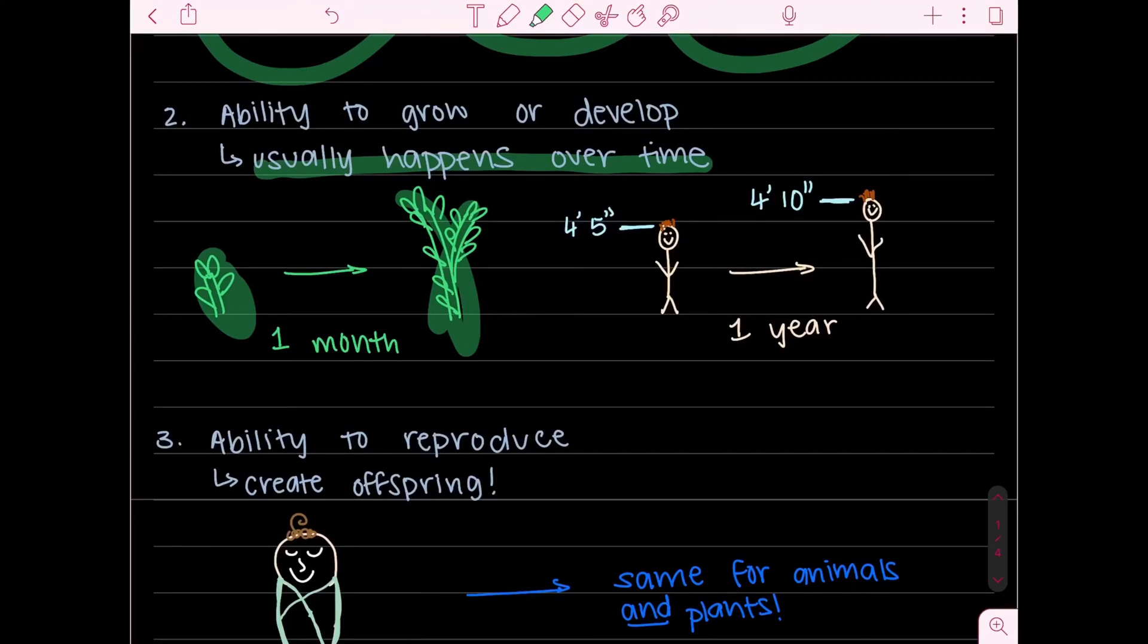But for humans it takes more time. For example this child is 4'5 at the moment and within a year or maybe one and a half years that child will grow to be 4'10". And it's not only height that develops, it's also mental state, it's also your features that develop and this happens over a period of time like I said. And similar to humans, animals also grow in a similar way.